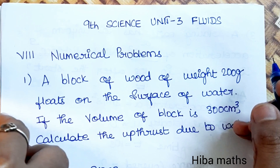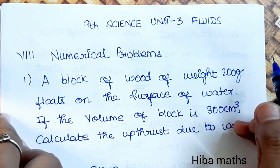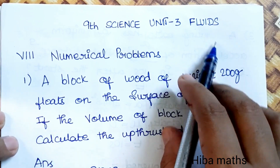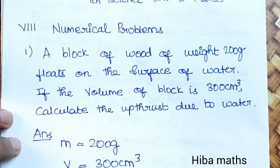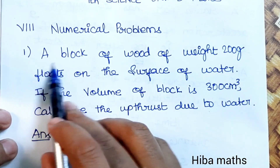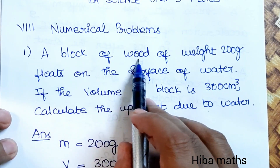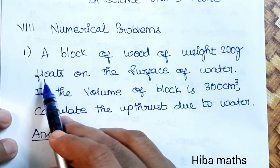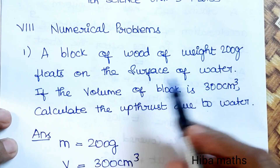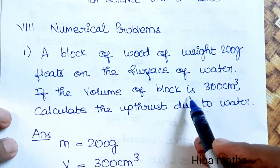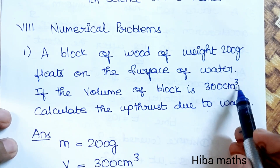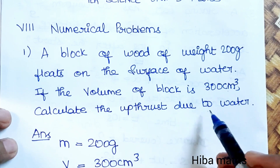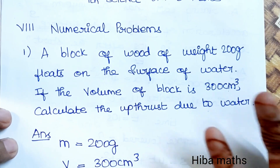Hi students, welcome to Hibamax study time. 9th standard science, unit 3 fluids lesson: numerical problems. First question — a block of wood of weight 200 grams floats on the surface of water. If the volume of the block is 300 centimeter cube, calculate the upthrust due to the water.